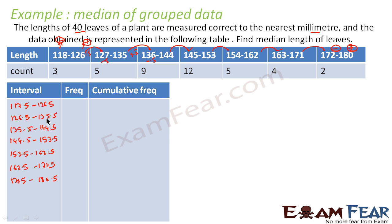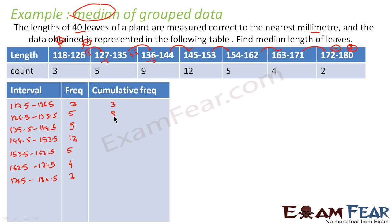Now it is proper grouped data since boundaries match up. The frequencies are 3, 5, 9, 12, 5, 4, and 2. Finding the cumulative frequencies: 3, 8, 17, 29, 34, 38, and 40. The value of n is 40.